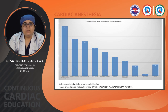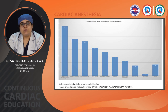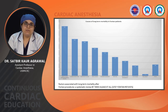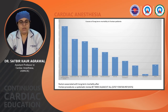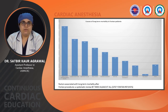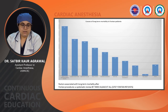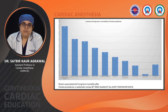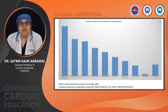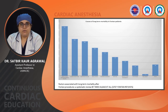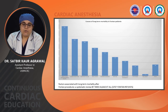A review by Tarek Alsaid et al of around 6700 Fontan patients shows that the major causes of post-op long-term mortality are heart failure, followed by sudden death due to arrhythmias, respiratory failure, renal failure, thromboembolic events, infections, protein-losing enteropathy, liver disease, malignancy, and other causes.